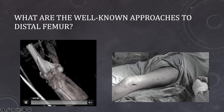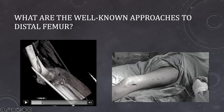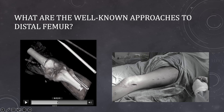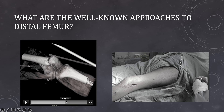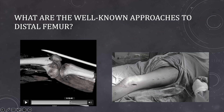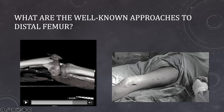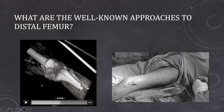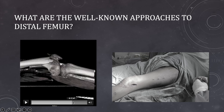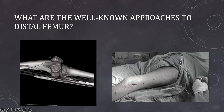In some articular fractures that are not much displaced — where articular reduction is maintained or minor displacement can be corrected with joystick maneuvers — we can use the MIPO technique in which only some part of the lateral approach is used for placement of the plate. The plate can be entered from the distal part, then slid over the lateral surface of the femur proximally, and the proximal screws placed using stab holes for the locking sleeve.